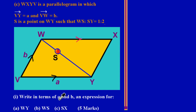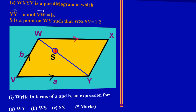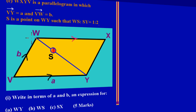Part A asks us to write an expression for the vector WY in terms of a and b. To think about this, imagine the diagram is a play field and you need to travel from W to Y.